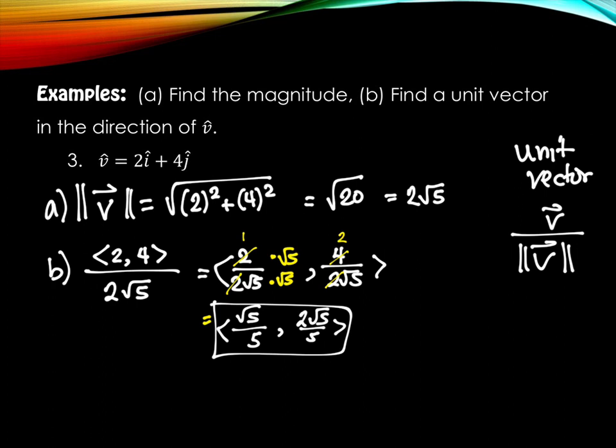How could we actually verify that it really is a unit vector? What could we do? We're not going to do it, but what could we do? What does it mean to be a unit vector? It's a vector of length 1. How could I check to make sure this vector has length 1? You could find its magnitude. We could find the magnitude of this. We could square this piece and square this piece and add them together and take the square root. We could do the same thing we did on part a, just with this one down here, and verify that it really has length of 1.